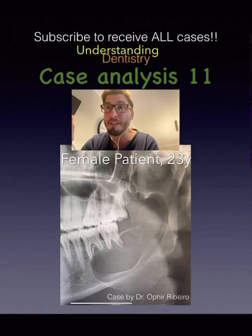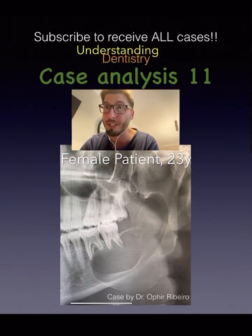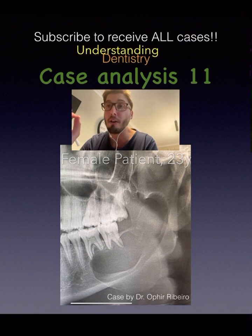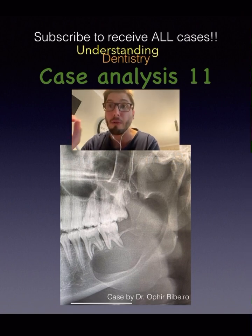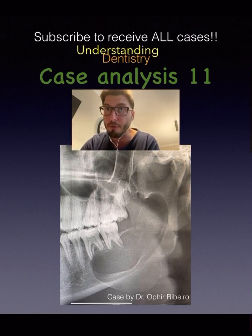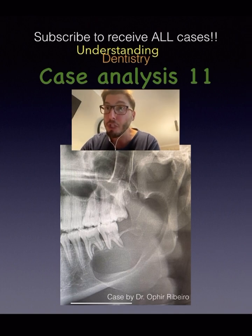Hello guys, case number 11 here. Feel free to pause the video and try by yourself to diagnose this lesion. That's a radiolucent, well-limited lesion with corticated borders, and that's a 2D OPG so we can see superimpositions.